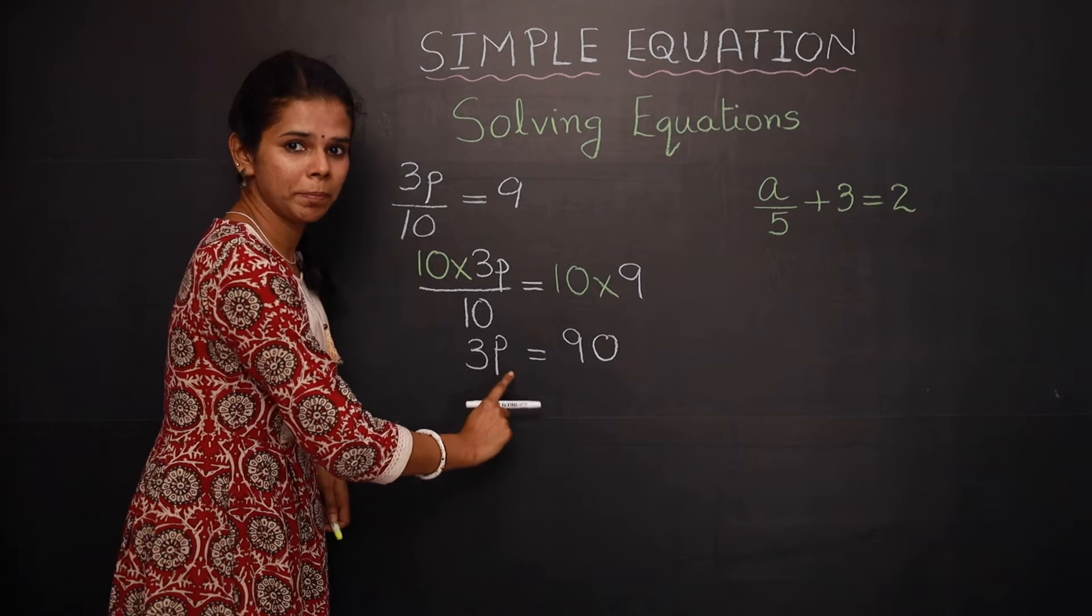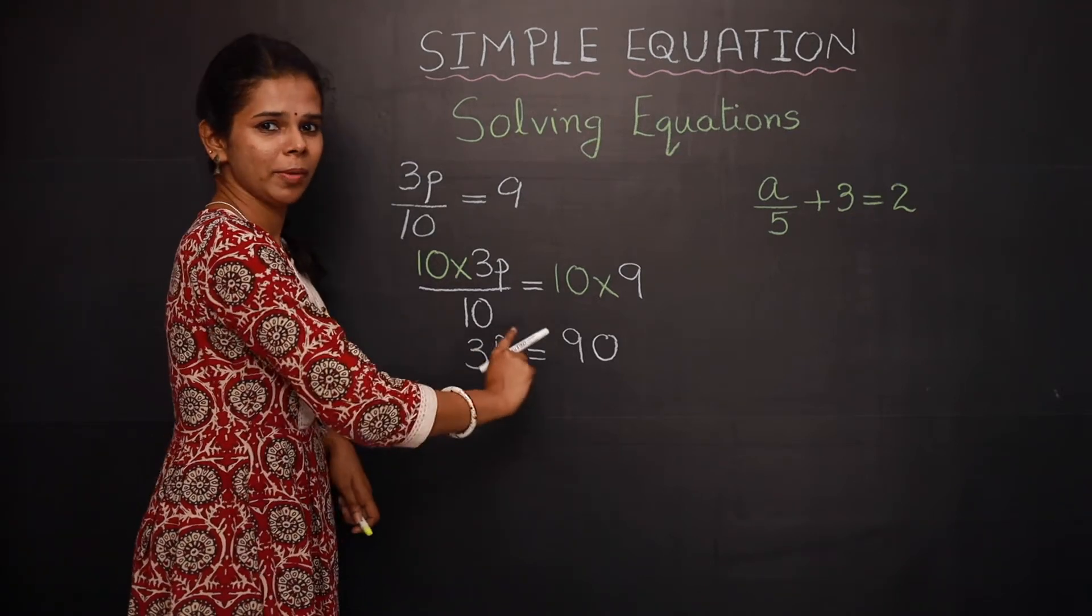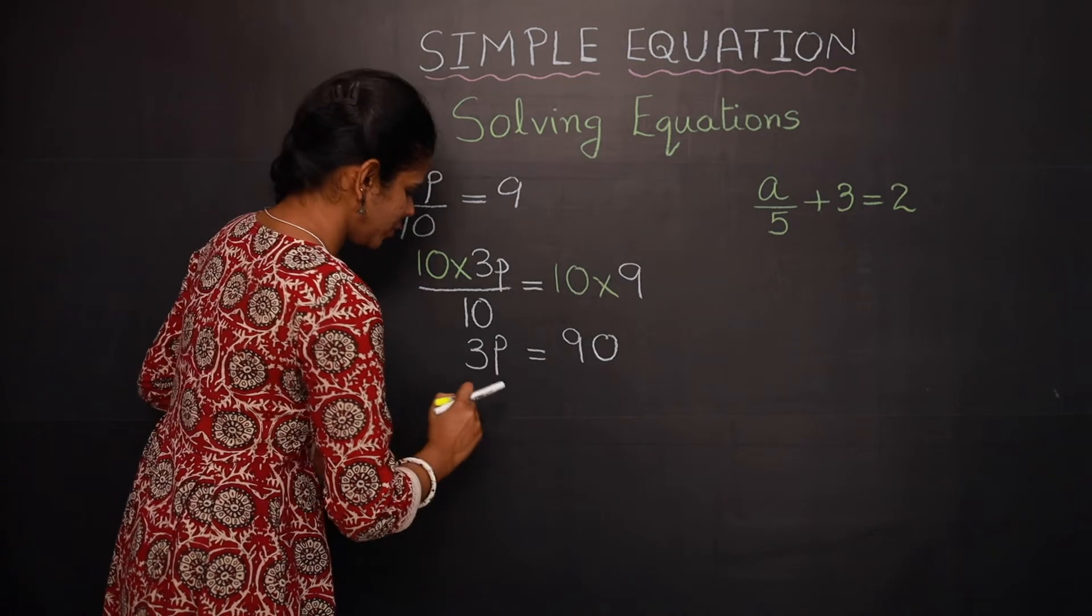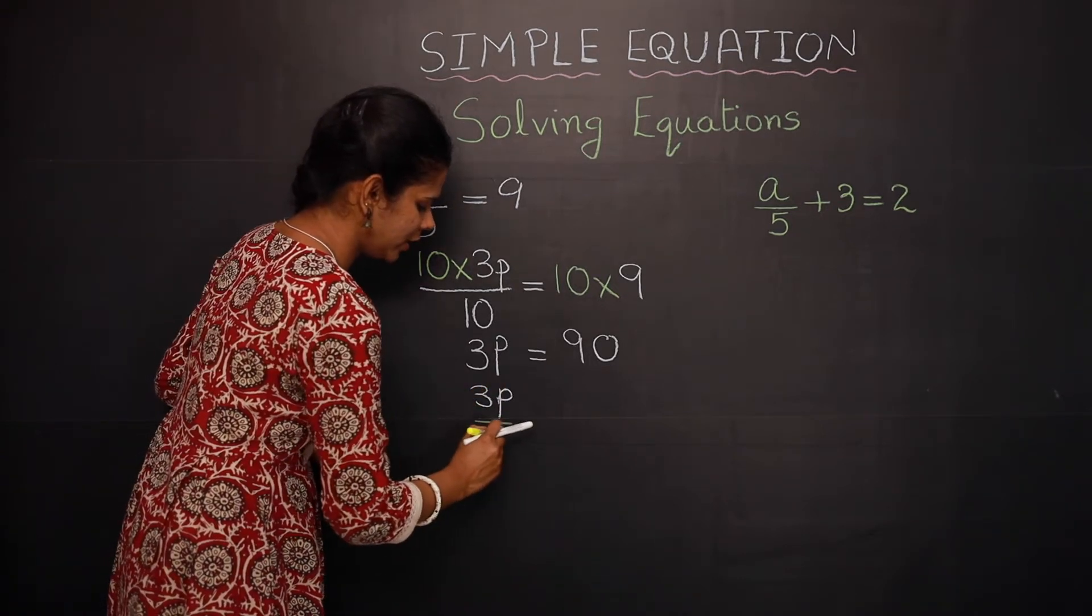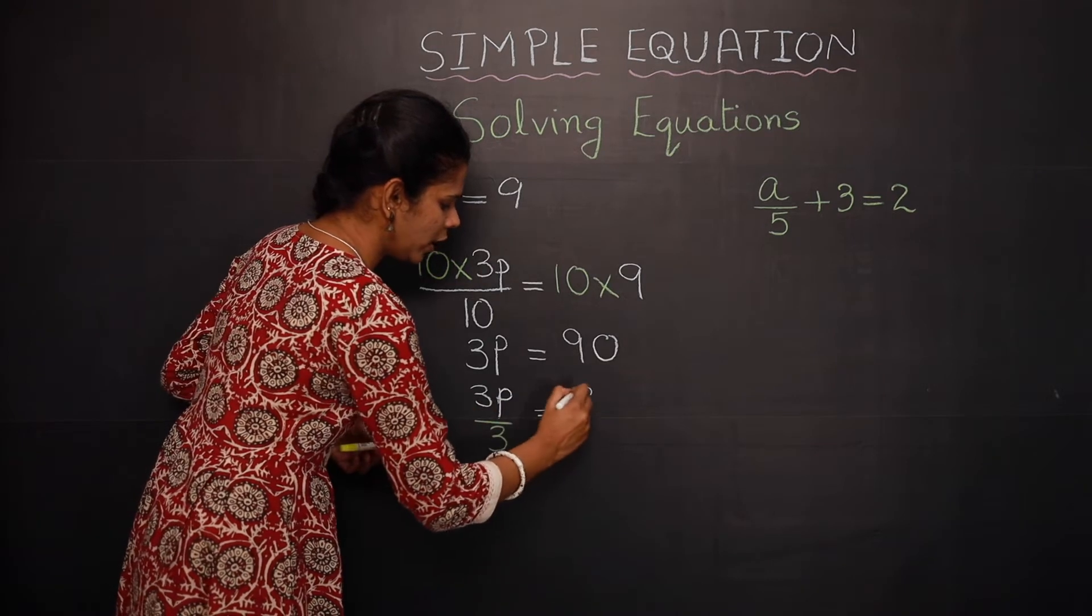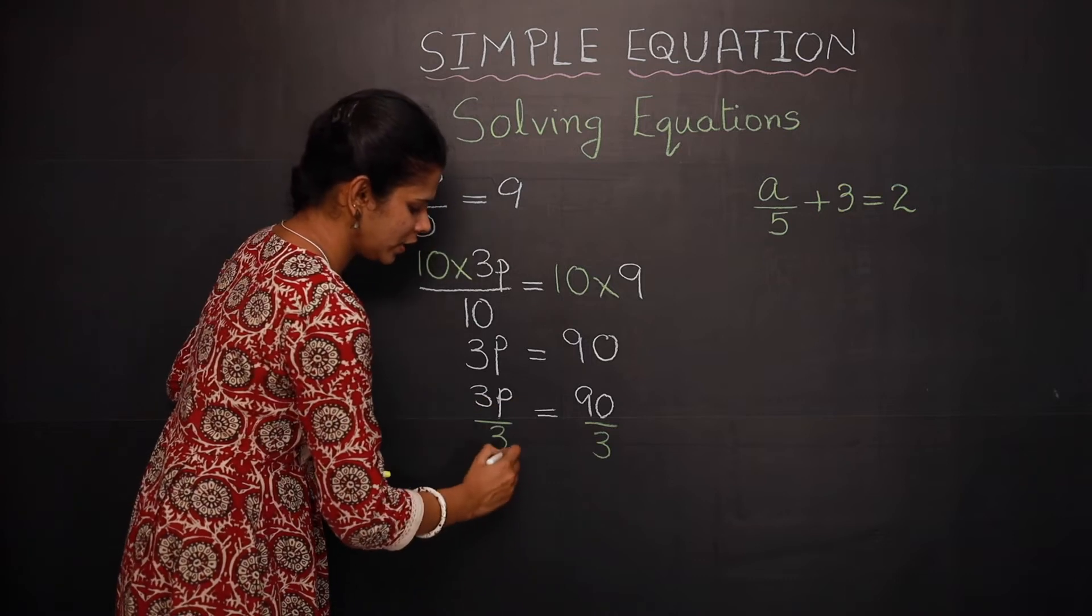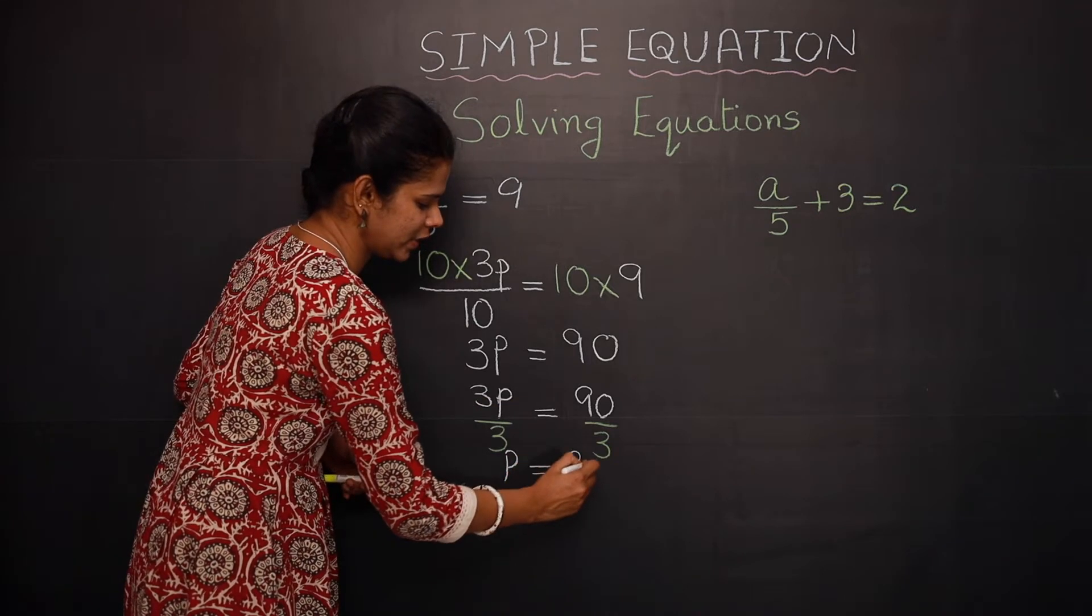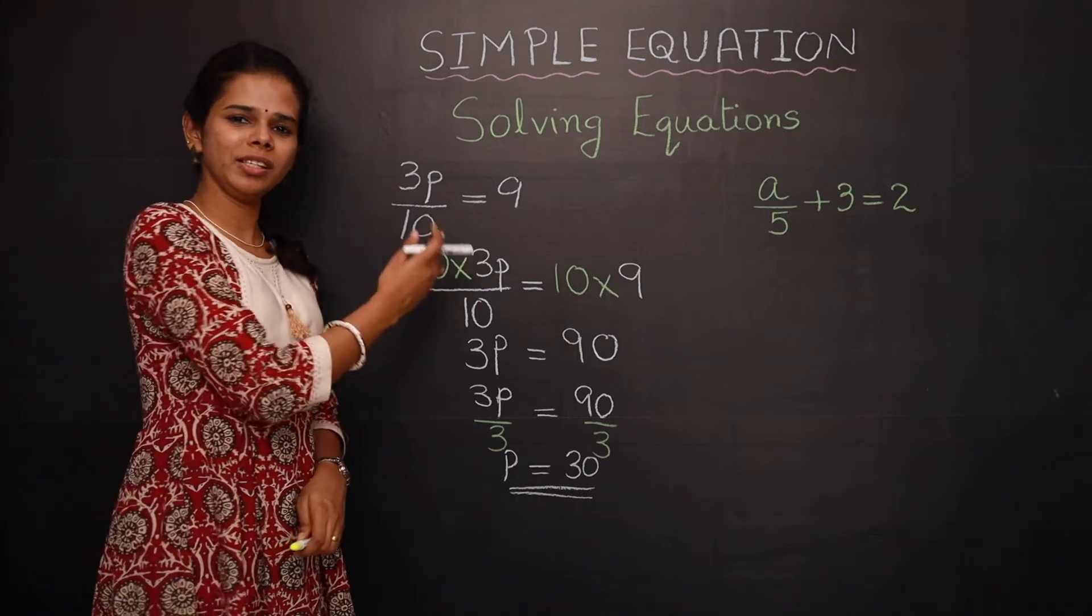So here it is 3 multiplied by p. So here to remove 3 you will divide both sides by 3. So 3p divided by 3, p gives you 30. So p equal to 30 is a solution of this given equation.